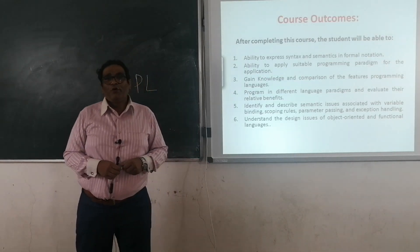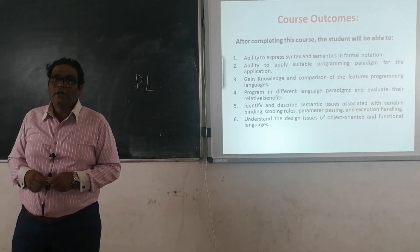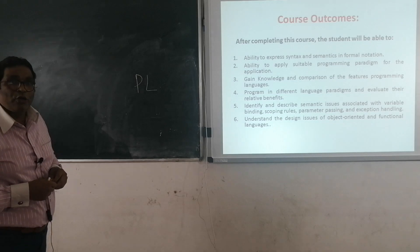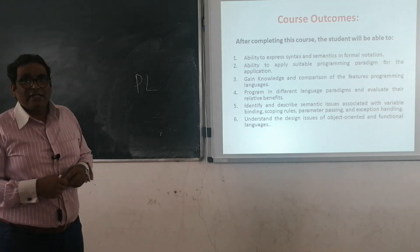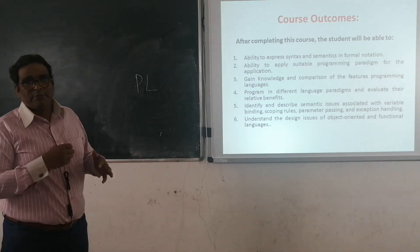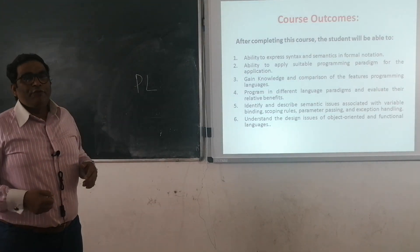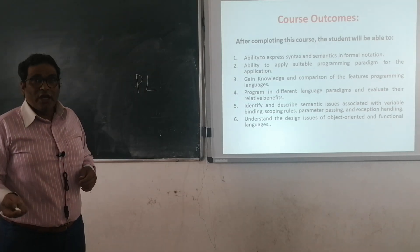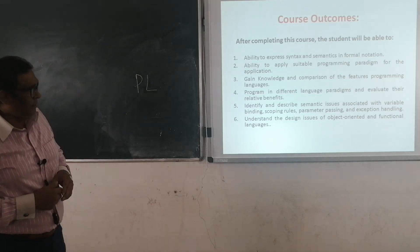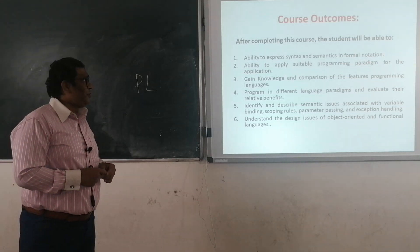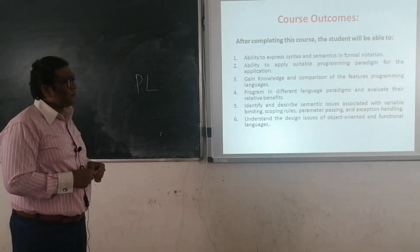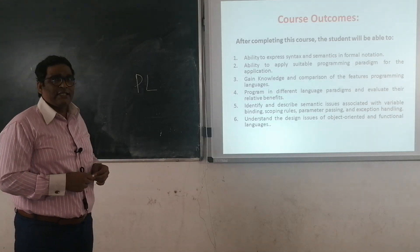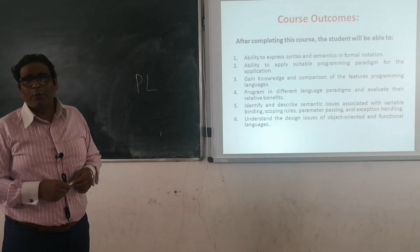Before we move on, we need to see what we are going to learn — that is the course outcome. The meaning of course outcome is that when you learn any language, it specifies clearly what you are going to do with what you have learned. Here, we are going to see the ability to express syntax as well as semantics in formal notation.